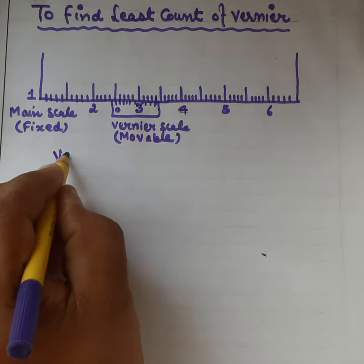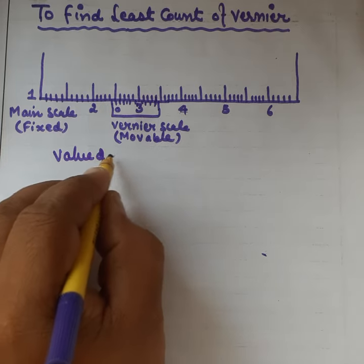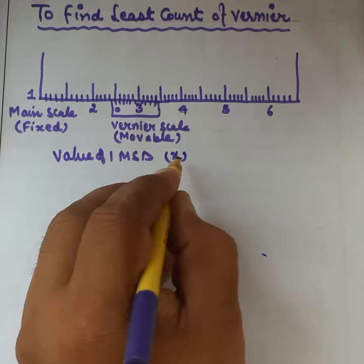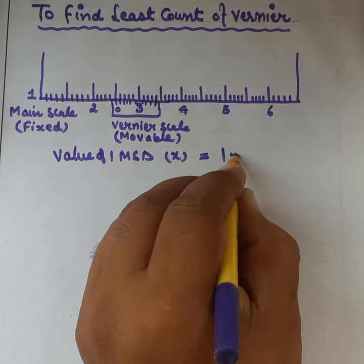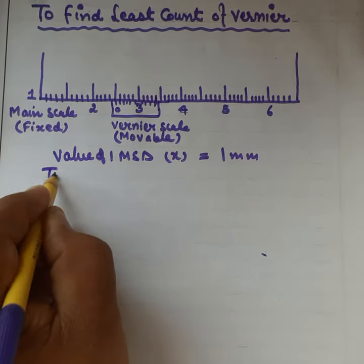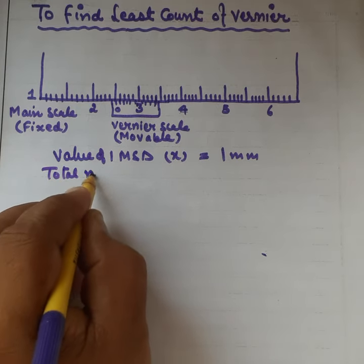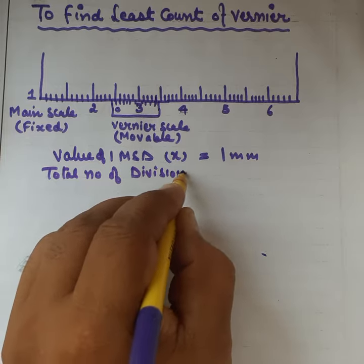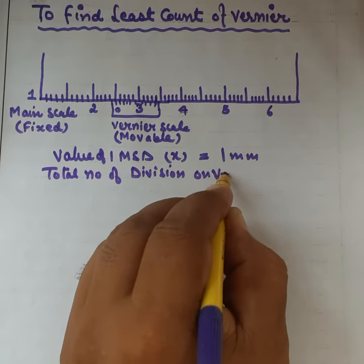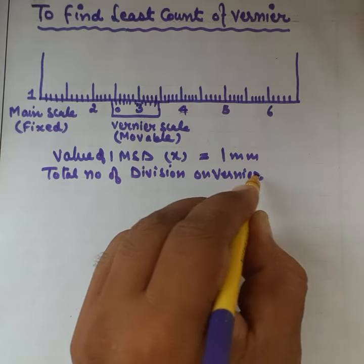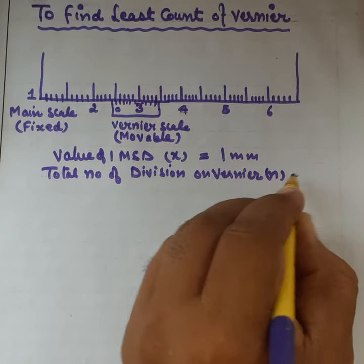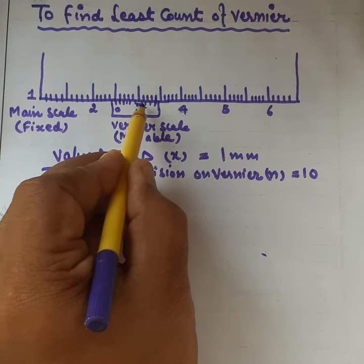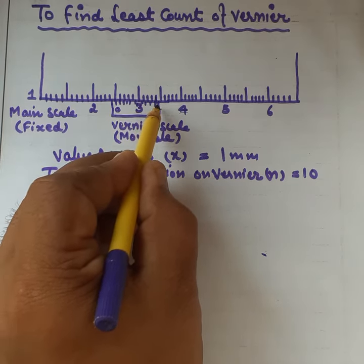To find out the value of one main scale division, x equals 1 mm. Total number of divisions on vernier, n equals 10. So 1, 2, 3, 4, 5, 6, 7, 8, 9, and 10, these are the 10 divisions on the vernier scale.